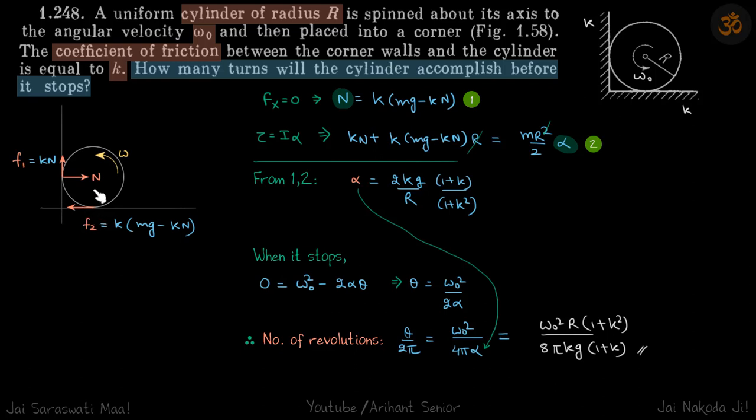Now there's no need to write this normal reaction because we know that there will be one force MG down. And this F1 is up. So normal reaction will be MG minus F1 or MG minus KN. So if that is the normal reaction, the frictional force will be K times MG minus KN.